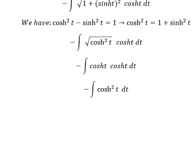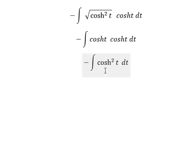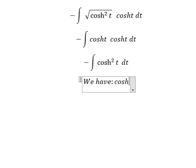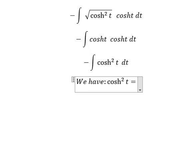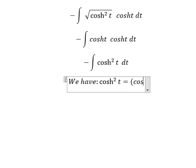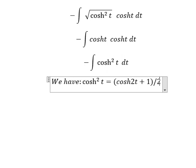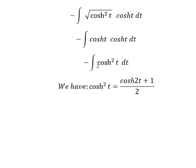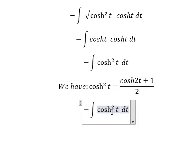And now we have the formula here. That is cosh(t) plus one, over two. So we need to transform this into this form.